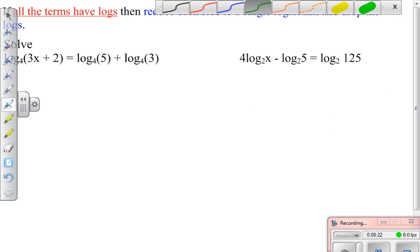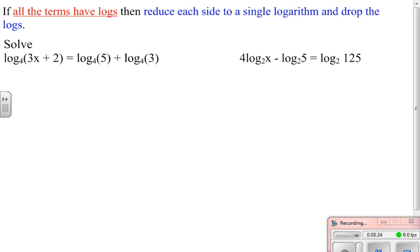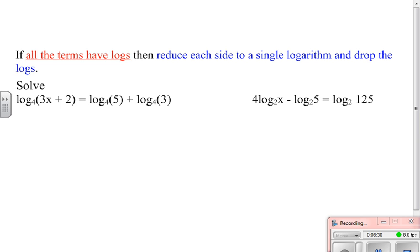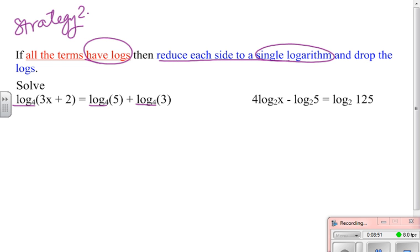Now the next strategy is one we're going to use if we already have things in logs. Okay, strategy 2. So if we already have everything in log, log of this equals log of this equals log of this, we're still going to reduce to a single log, so we're still going to go down to a single log, and then we can drop the logs.